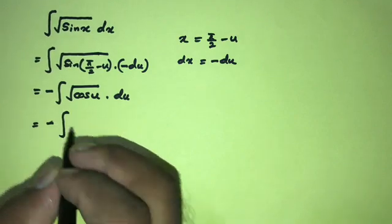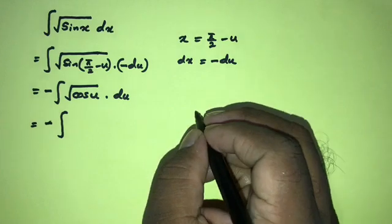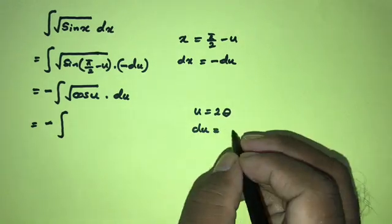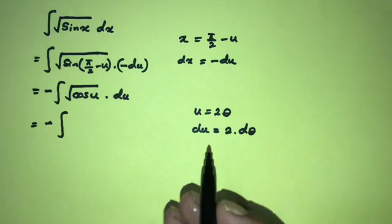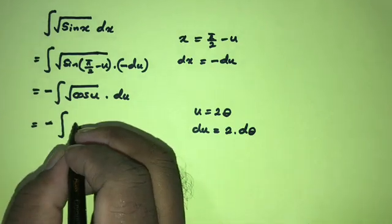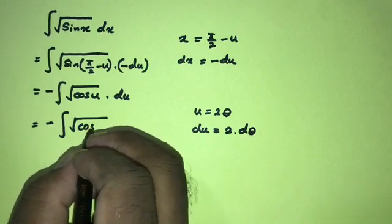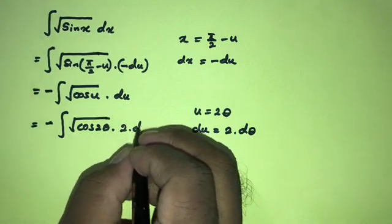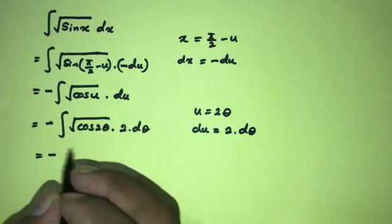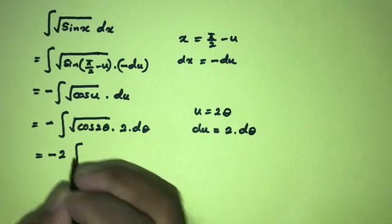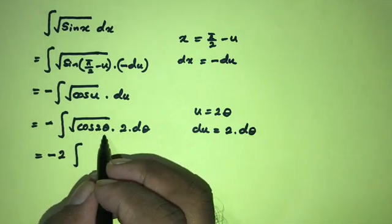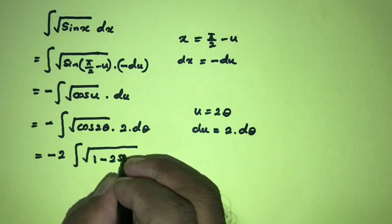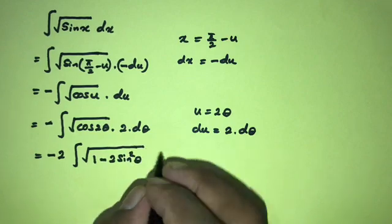Again we can use the substitution method. If we take u equal to 2 times theta, then du equals 2 times d-theta. Substituting, we get cosine of 2 theta (double angle), and du equals 2 d-theta, so we have minus 2 times the integral of cosine of 2 theta.